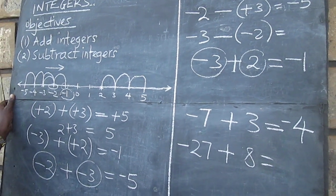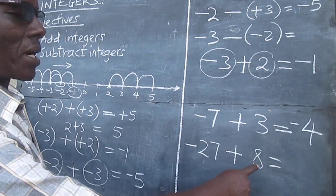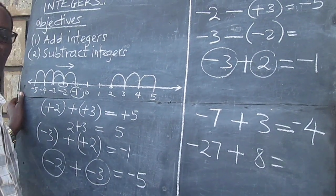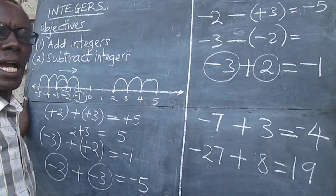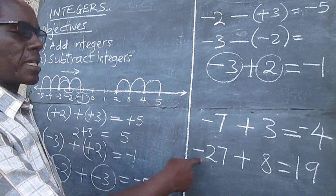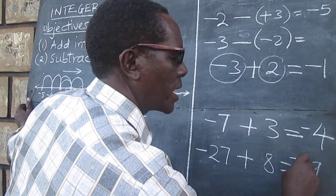The working is the same. We would take 27, subtract 8, to get 19, and then assign the sign of the larger number, so that we have negative 19.